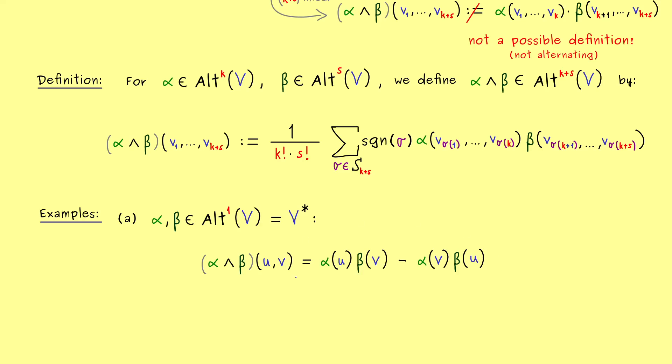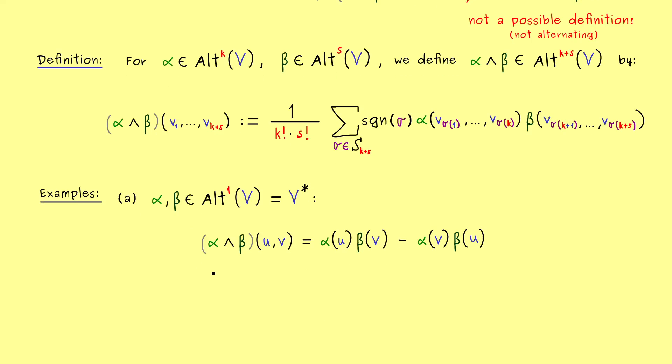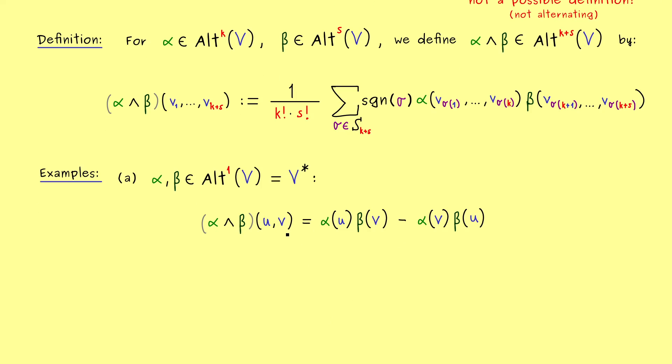And now we have it. This is the general formula of the wedge product of two 1-forms. So easy to remember, but please don't forget, the outcome here is an alternating 2-form.